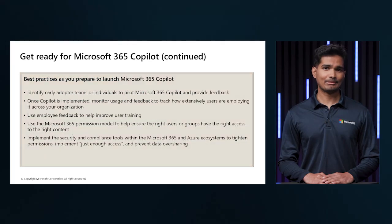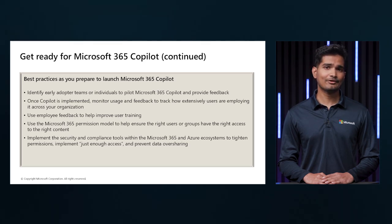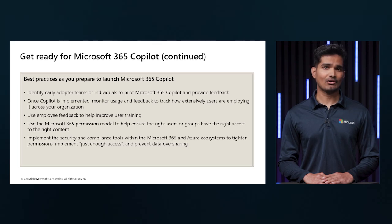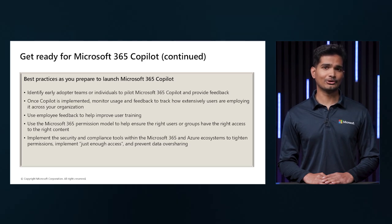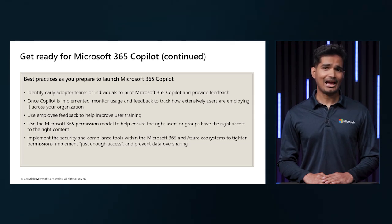Some best practices to keep in mind: identify your early adopter teams or individuals to pilot Microsoft 365 and have them provide feedback. Once the tool is implemented, monitor usage and feedback so you can track how employees are using Copilot across your organization. This will help you keep a flexible approach when it comes to deploying licenses. Make sure to have security top of mind and have only the right people get access to the right content.